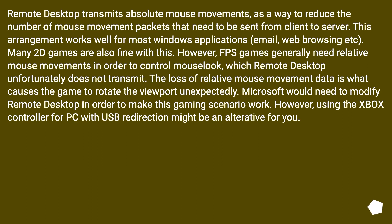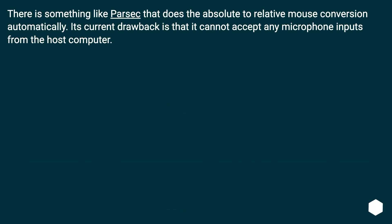Remote Desktop transmits absolute mouse movements as a way to reduce the number of mouse movement packets sent from client to server. This works well for most Windows applications — email, web browsing, etc. — and many 2D games are also fine with this. However, FPS games generally need relative mouse movements to control mouse look, which Remote Desktop unfortunately does not transmit. The loss of relative mouse movement data is what causes the game to rotate the viewport unexpectedly. Microsoft would need to modify Remote Desktop to make this gaming scenario work. However, using an Xbox controller for PC with USB redirection might be an alternative. There is also something like Parsec that does the absolute-to-relative mouse conversion automatically, though its current drawback is that it cannot accept microphone inputs from the host computer.